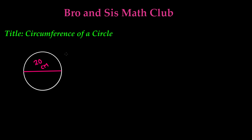In order to find the circumference of a circle, there are two different formulas. I will be showing you guys how to find the circumference using both. The first formula is C, or circumference, is equal to 2πr.